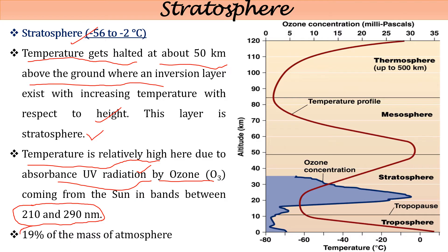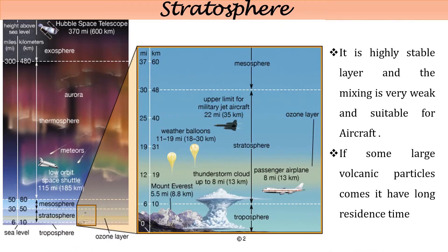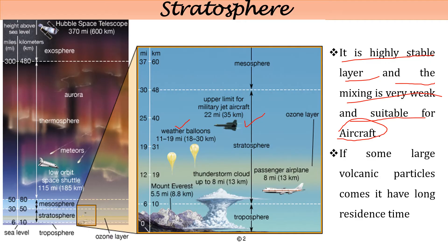19% of the total mass of the atmosphere is within the stratosphere. It is a highly stable, stratified layer where mixing is very weak, making it highly suitable for aircraft movement and weather balloons. However, if volcanic eruptions propel particles past the tropopause into the stratosphere, those particles remain there for a long time without being discarded.